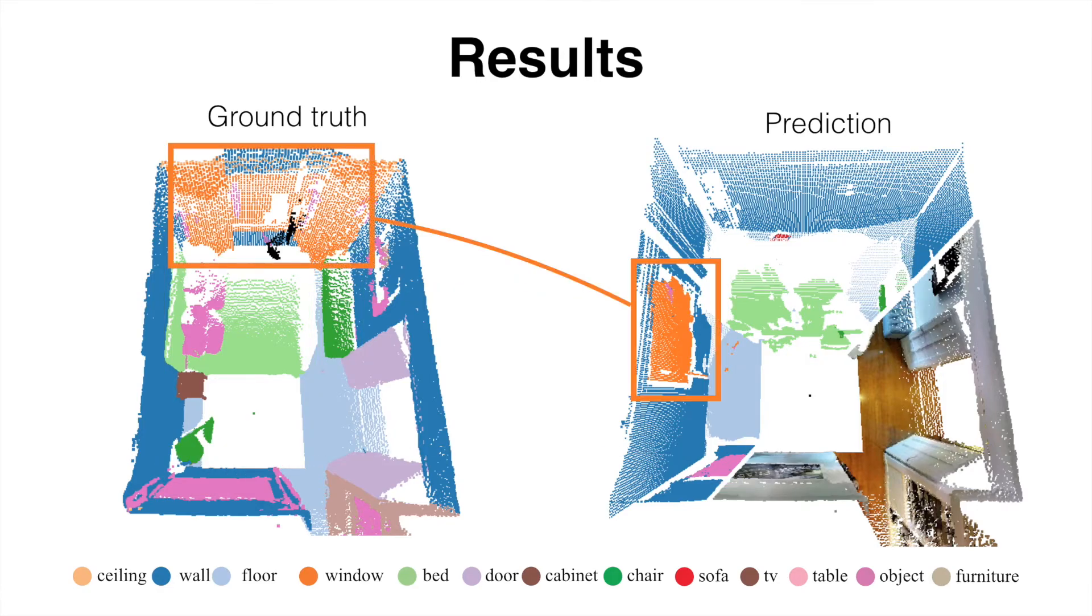The network also correctly predicts the existence of a window, however with a different location compared to ground truth. On the other hand, the prediction misses several objects such as cabinets and pillows.